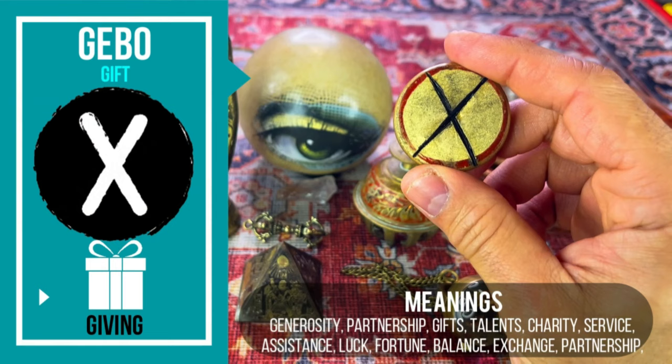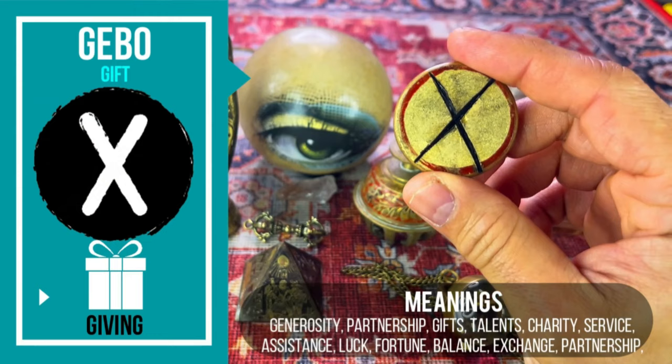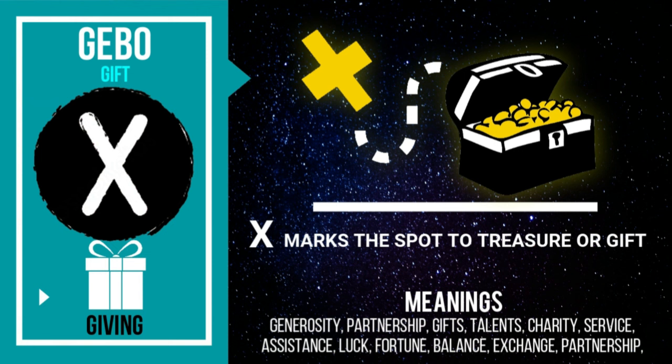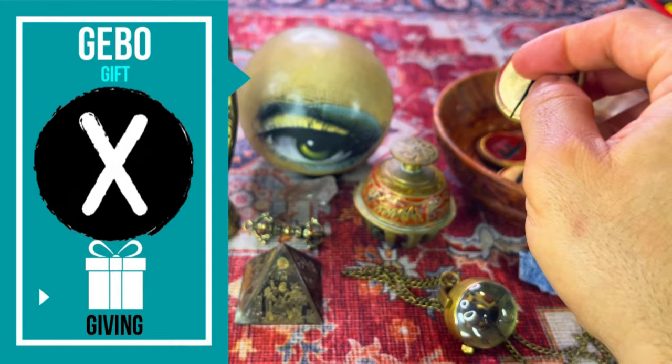7. Gebo. Gebo is the rune of the gift and the exchange. It embodies two important concepts: reward for effort and altruistic giving with no expectation of reward. It also relates to generosity, balance, and positive relationships. It has no inverted meaning. Think of this symbol as an X — X marks the spot for a treasure or a gift.